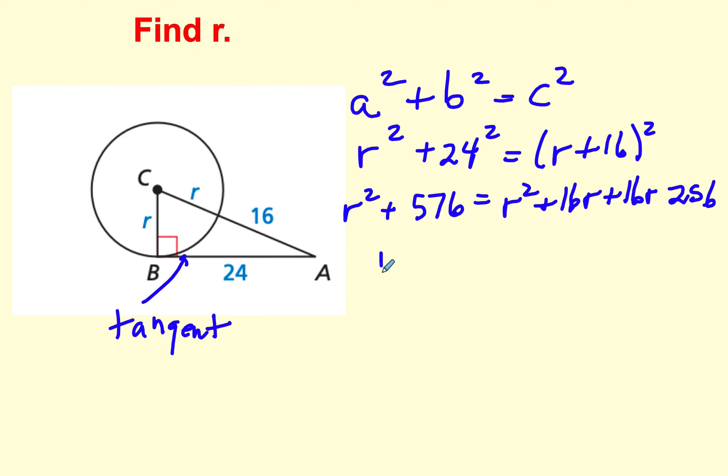So now we have r squared plus 576 equals r squared plus 32r plus 256. I'm going to subtract r squared on both sides, and when I do that, the r squares go away. Now I'm going to subtract 256 from 576. I'm going to get 320 equals 32r, divide both sides by 32, and the answer is 10.